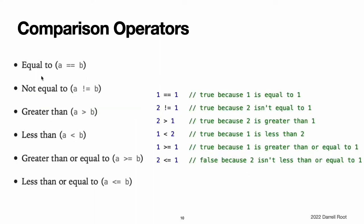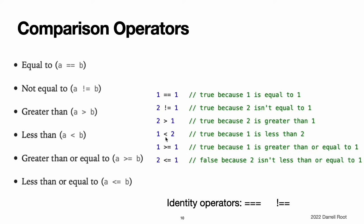Swift supports the following comparison operators: equal to, not equal to, greater than, less than, greater than or equal to, and less than or equal to. Note: Swift also provides two identity operators, which you use to test whether two object references both refer to the same object instance. For more information, see Identity Operators. Each of the comparison operators returns a Bool value to indicate whether or not the statement is true. For example: 1 == 1 is true, 2 != 1 is true, 2 > 1 is true, 1 < 2 is true, 1 >= 1 is true, and 2 <= 1 is false.